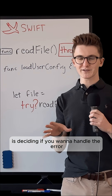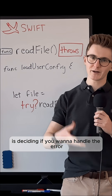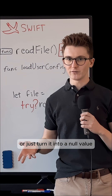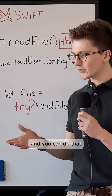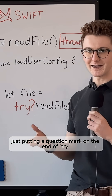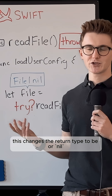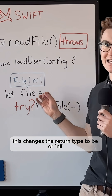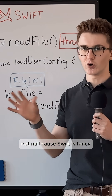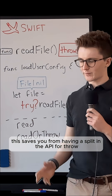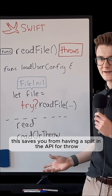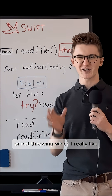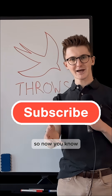The last cool part is deciding if you want to handle the error or just turn it into a null value. You can do that by just putting a question mark on the end of try. This changes the return type to be or nil — not null, because Swift is fancy. This saves you from having a split in the API for throwing or not throwing, which I really like. So now you know.